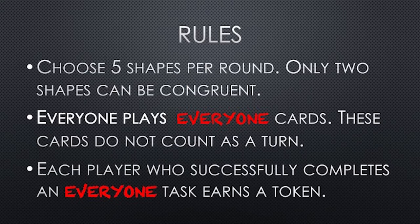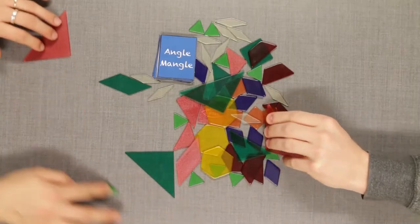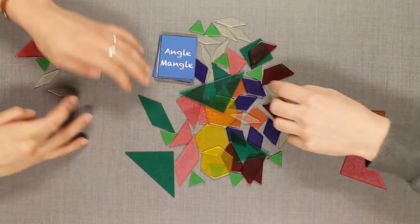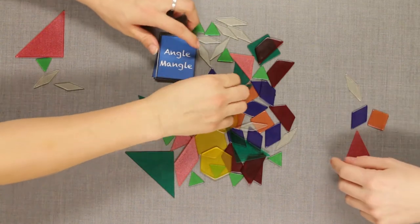There are a few rules to remember when playing this game. Each player will choose five shapes with at most two alike. After each round, players return their shapes and obtain five new ones.